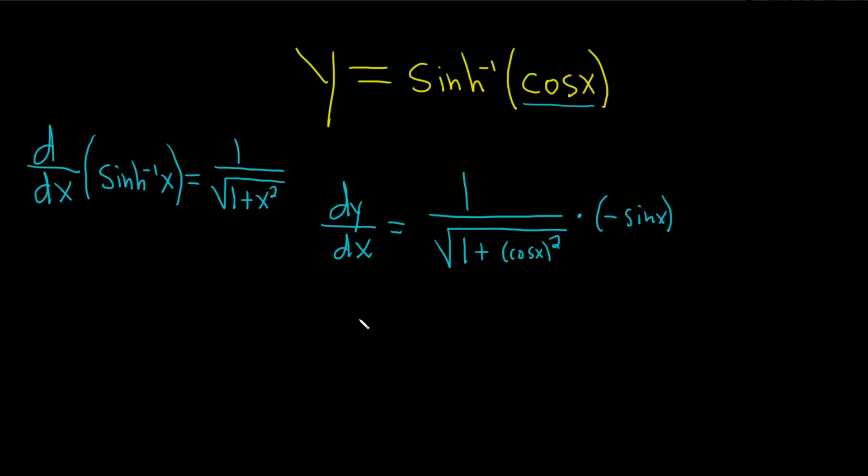So let's just go ahead and clean it up. So we have dy dx equals, so let's put this upstairs, so we have negative sinh x. That's all divided by the square root of 1 plus, and this cosine x, we can write it as cosine squared x like that in the shorthand notation.